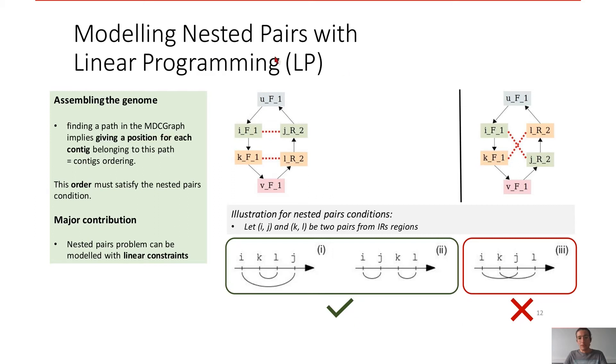Our major contribution is nested pairs program can be modeled with linear constraints. For example, we have two pairs of contigs here, an example of what is acceptable. You have two pairs, two pairs of contig forward, reverse, forward, reverse. Same sequence but reversed. The first case is what we want. The second case is acceptable. But the third case is not acceptable.